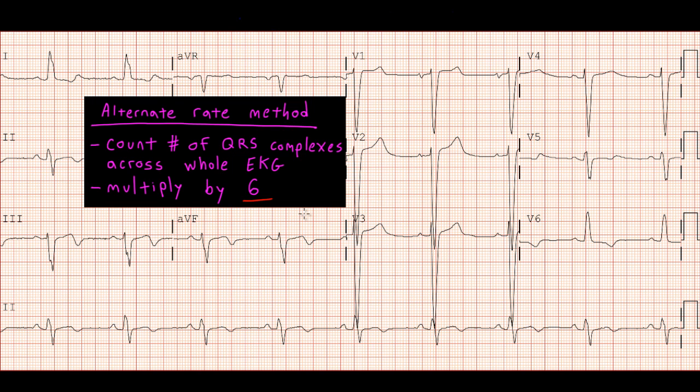So over here we can see we've got 1, 2, 3, 4, 5, 6, 7, 8, 9 QRS complexes. 9 times 6 is, wait, let me get my calculator. No, just kidding, I don't need it. 9 times 6 is 54.